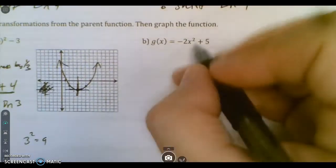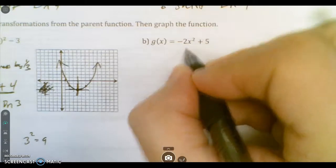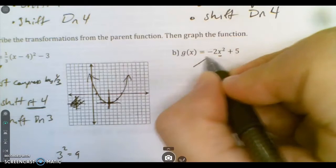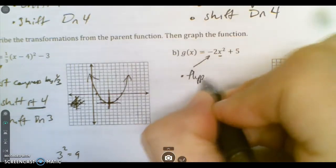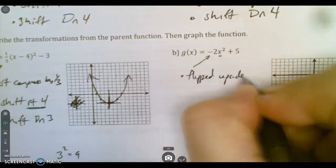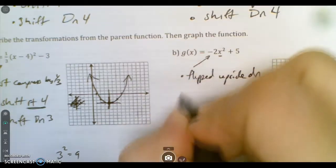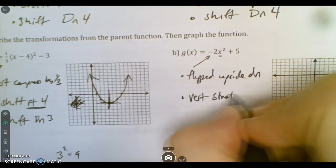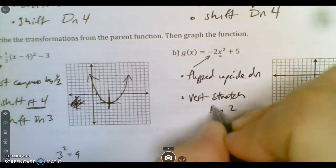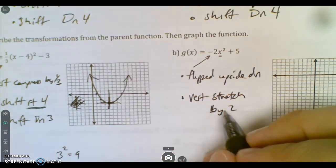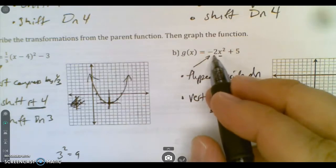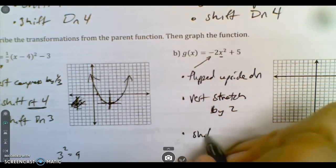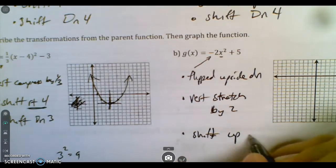Then we go to this one. Don't be shocked when you don't see parentheses. That just means there's no left or right shift. So I got three things going on. I got a negative sign, so it's flipped upside down. I got a 2, so it's vertically stretched by 2. Remember, I don't care about the negative sign as far as being greater than 1. In my opinion, that's a number greater than 1. It's just the negative sign flips it upside down.